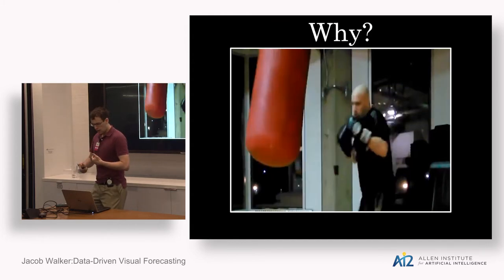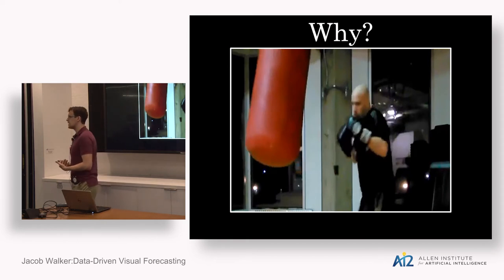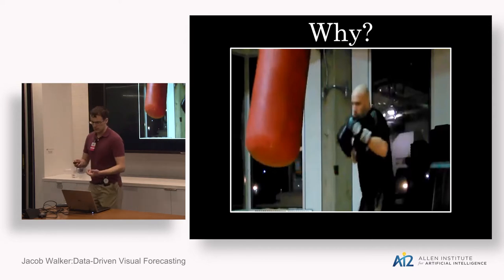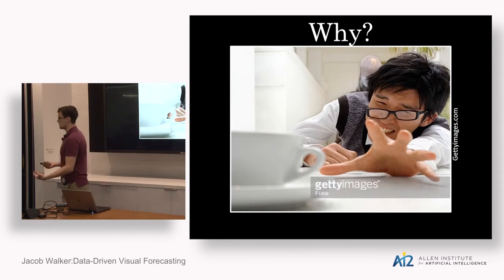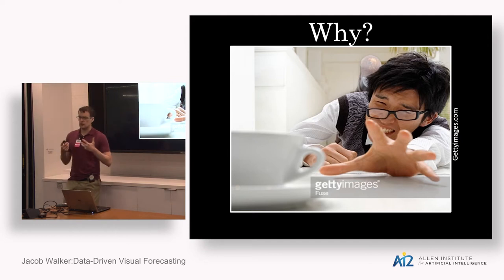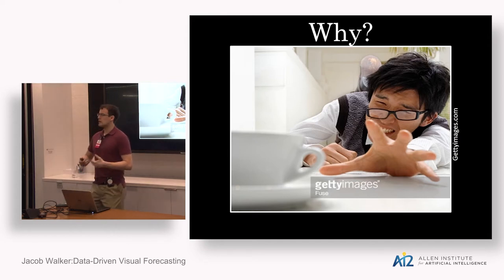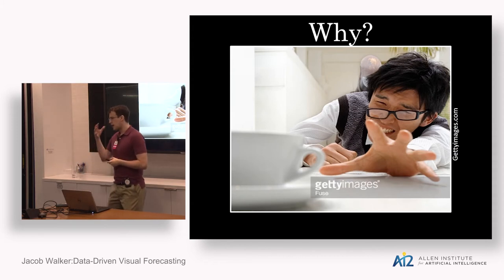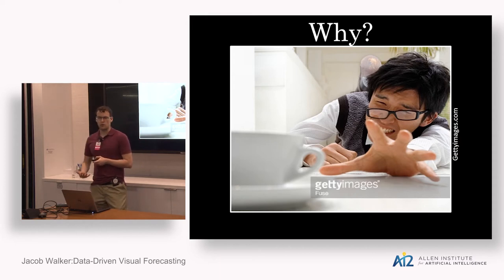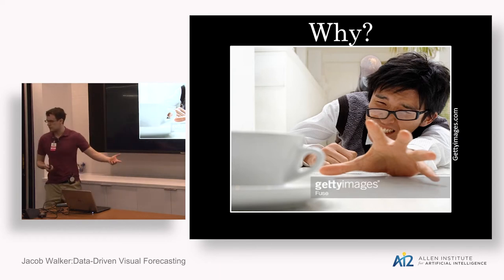So how and why would we be interested in getting computer systems to have this capability as well? There are a few direct applications of visual forecasting. The first is the idea of getting robots and computers to interact with the world in real time. For computers to understand the world as it happens, they need to identify actions not only after they've occurred, but perhaps even as they occur or even before they occur. For instance, we'd like computers to understand that this man really would like that coffee.